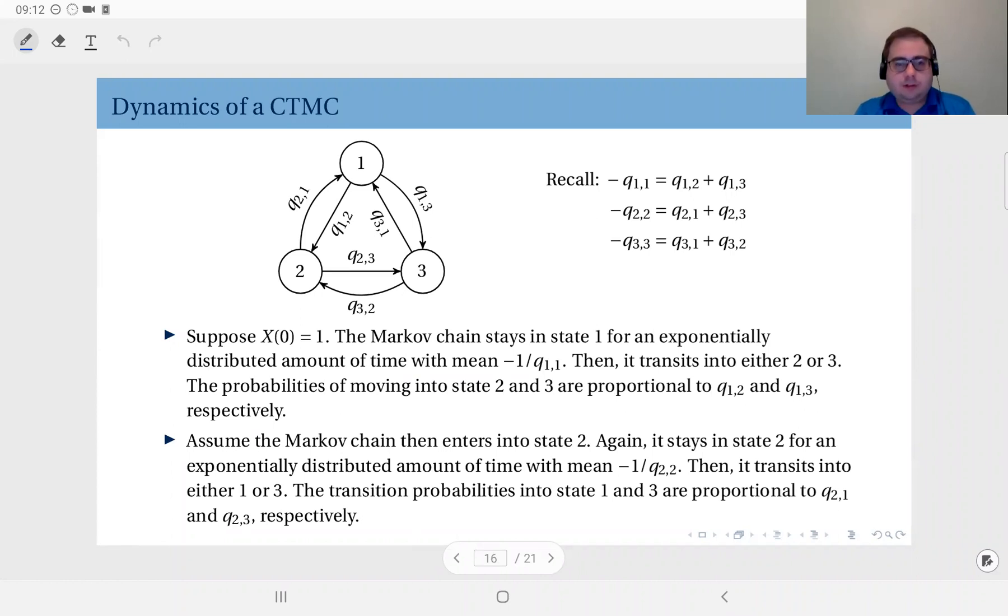So these are the state transition rates or the components of matrix Q. So I have in my infinitesimal generator matrix Q 1 1, Q 1 2, Q 1 3, Q 2 1, Q 2 2, Q 2 3, Q 3 1, 3 2 and 3 3. And of course Q 1 1 is a negative value which in magnitude equals the sum of Q 1 2 and Q 1 3. Similarly Q 2 2 is a negative value and in magnitude it's the sum of Q 2 1 and Q 2 3, so that the sum of rows make zero.